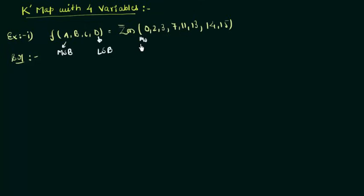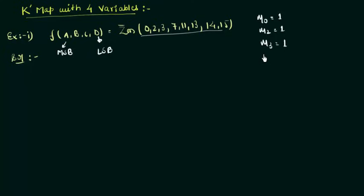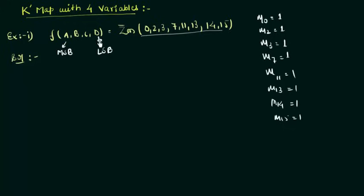This is your M0. We can write it as: M0 is 1, M2 is 1, M3 is also 1, M7 is 1, M11, M13, M14, and M15 are all 1. You know this representation very well. Now we will move to our KMAP — first we will draw a 16-cell KMAP.